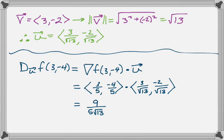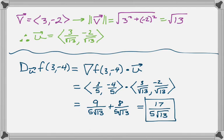And then plus -4/5 times -2 over root 13, which gives us plus 8 over 5 root 13, for a grand total of 17 over 5 root 13. And that's how you can calculate the directional derivative. I hope you found this example helpful. Good luck.